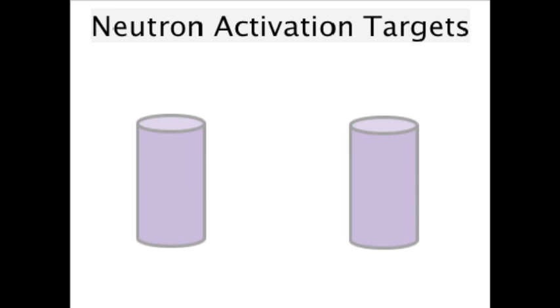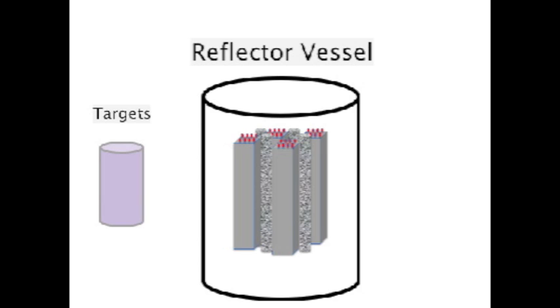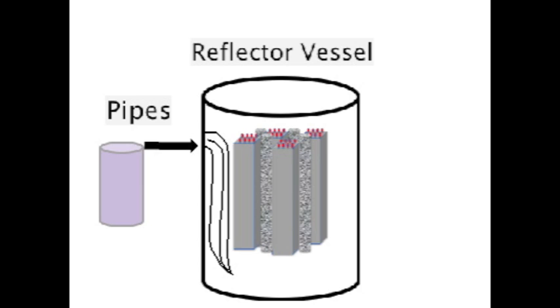Neutron activation targets are made of stable nuclides. Common targets contain either phosphorus-31 or strontium-88. Their products are used in radionuclide therapy. These targets are inserted into the reflective vessel by pneumatic systems. The pipes of these pneumatic systems can be seen running down the wall of the reactor into the reflective vessel.